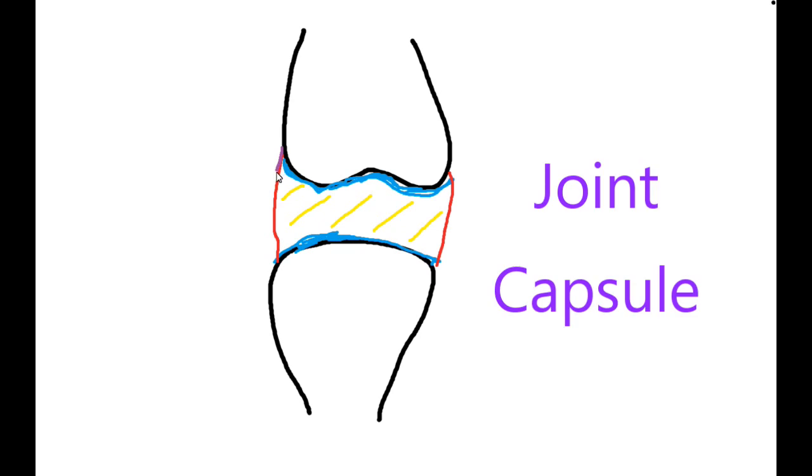This is our joint capsule. So the joint capsule runs around the exterior of our joint, and the inner lining of that joint capsule is that synovial membrane, that red membrane that I've drawn there already. And then that synovial membrane, which is attached to the inside of the capsule, secretes that yellow synovial fluid.